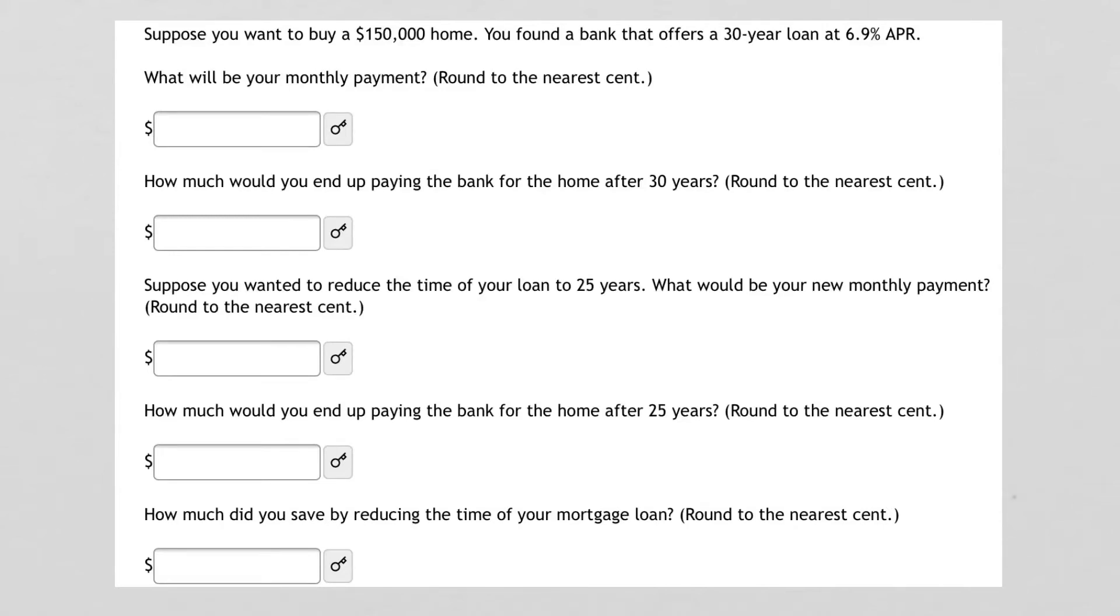Suppose you want to buy a $150,000 home. You found a bank that offers a 30-year loan at 6.9% APR. What will your monthly payment be? How much would you end up paying the bank for the home after 30 years? Suppose you wanted to reduce the time of your loan to 25 years. What would your new monthly payment be? How much would you end up paying the bank for the home after 25 years? And how much did you save by reducing the time of your mortgage loan?